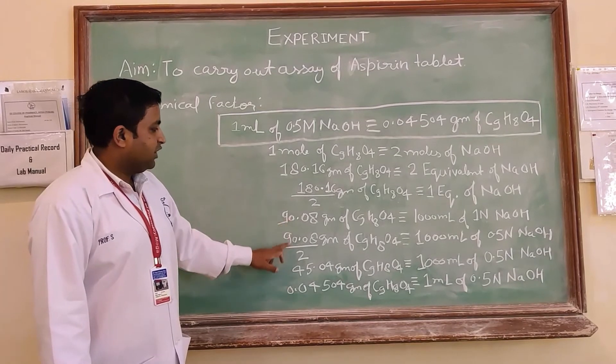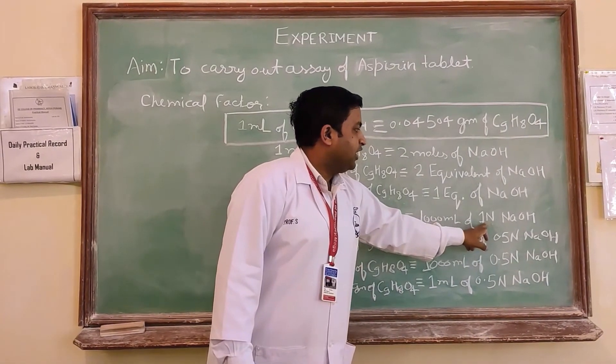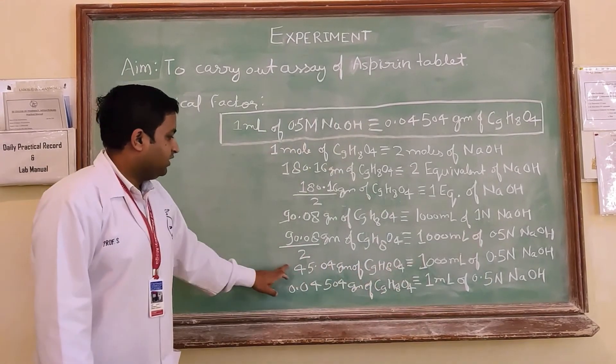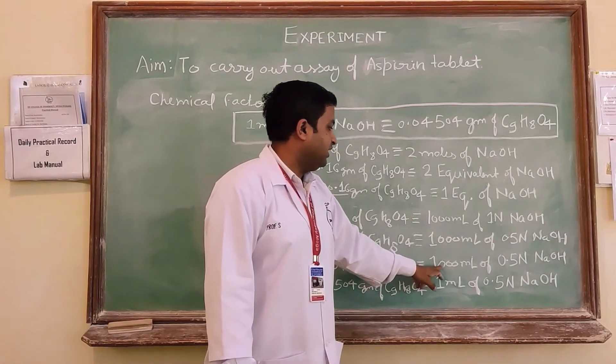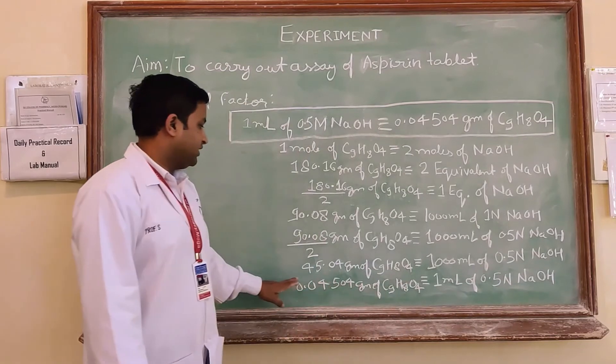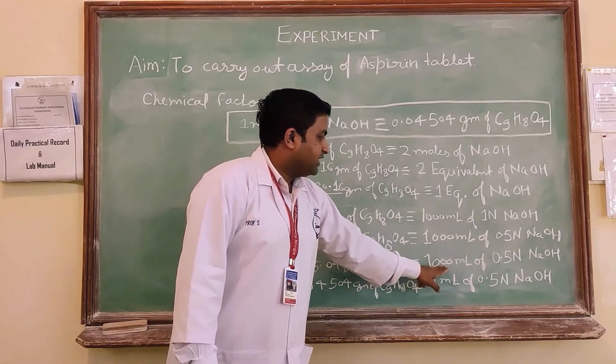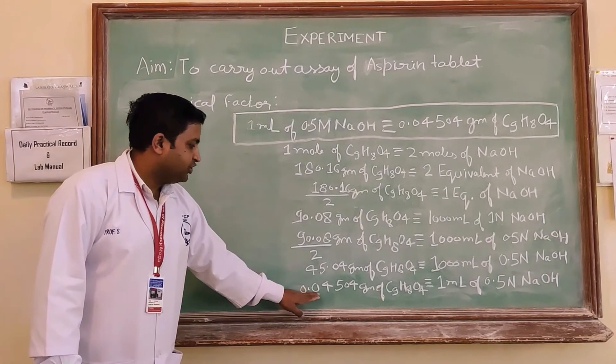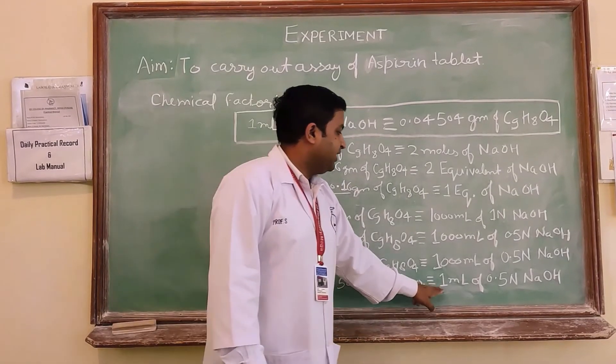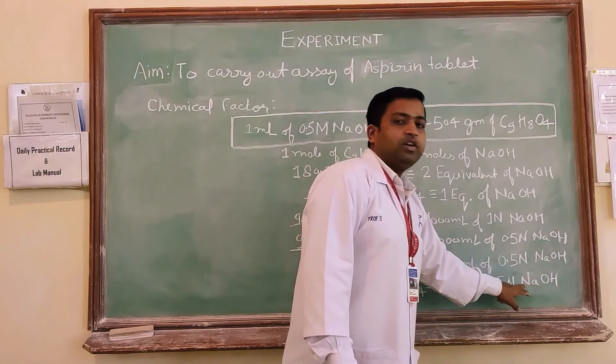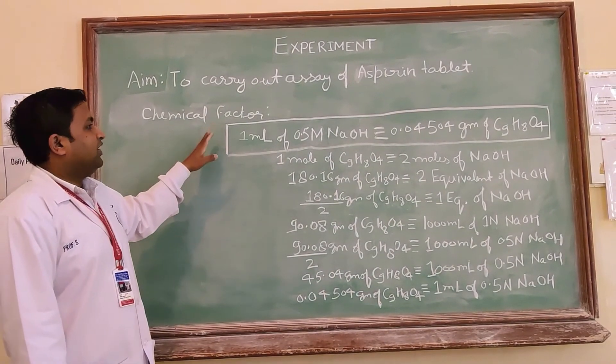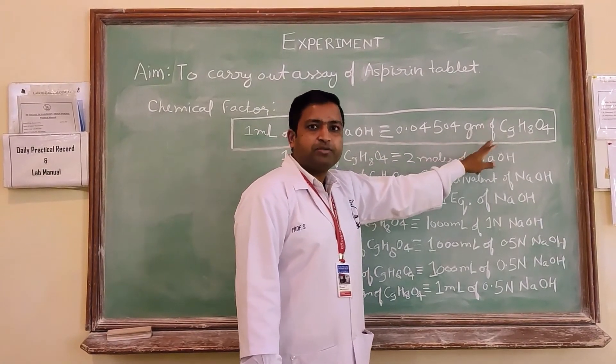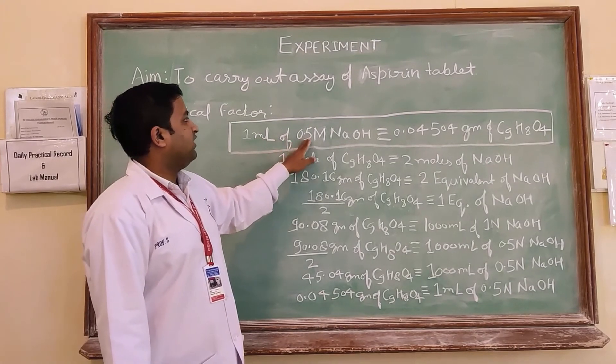Now if we divide this value by 2 then this side 1 normal will be 0.5 normal. This also we divide by 2 then 45.04 gram of aspirin will be equivalent to 1000 ml of 0.5 normal NaOH. If we consider this as 1 ml then this value should be divided by 1000. Accordingly 0.04504 gram of aspirin will be equivalent to 1 ml of 0.5 normal NaOH. Thus we can see that the final value is 0.04504 gram of aspirin which is equivalent to 1 ml of 0.5 molar NaOH.